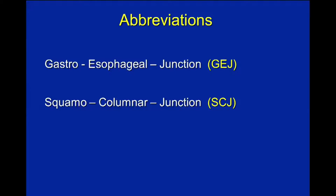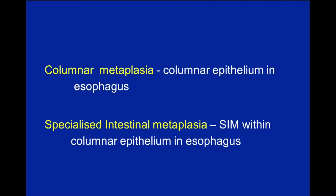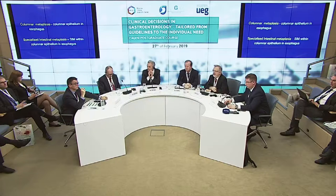The GEJ — gastroesophageal junction — is the border between the esophagus and stomach. The other important term is squamous columnar junction, or SCJ, which is a slightly different term. We should also remember columnar metaplasia, meaning the presence of columnar epithelium in the esophagus, and specialized intestinal metaplasia, abbreviated SIM — the presence of intestinal metaplasia within columnar epithelium in the esophagus.